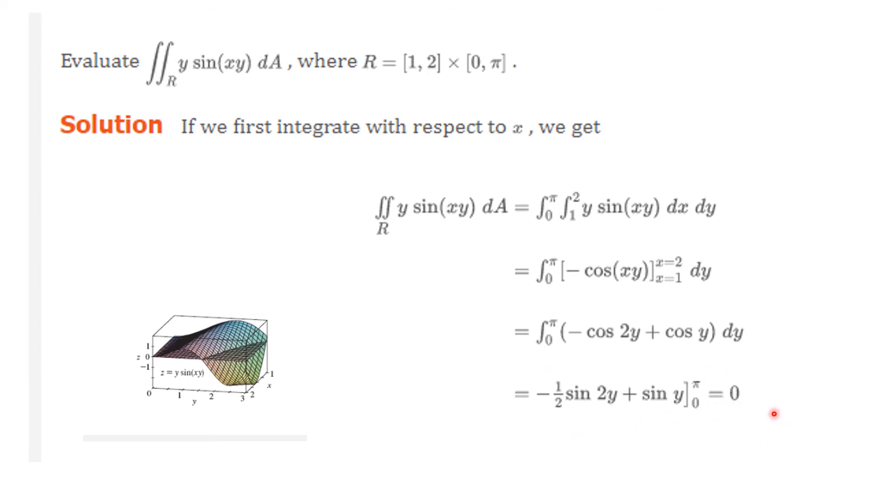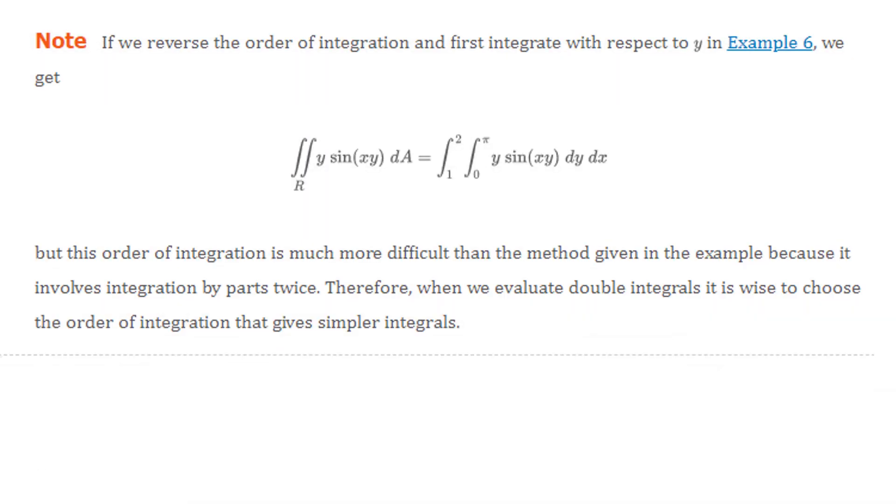Now, you might say, oh, well, you only integrated this with respect to X first. Could I have integrated with respect to Y first? Well, the answer is yes, but if we reverse the order of integration and first integrate with respect to Y, you get this, which is a much harder integral because you have to integrate by parts twice. Now, I might give you problems where you have to integrate by parts even twice, but you want to avoid that if you can. So sometimes there's an easier way to evaluate it, and sometimes the truth is you can only evaluate it one way. So it's wise to choose the order of integration that gives simpler integrals.